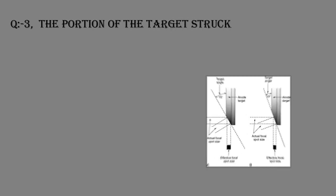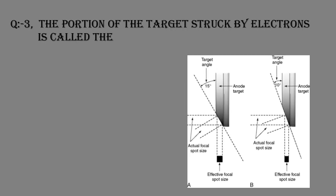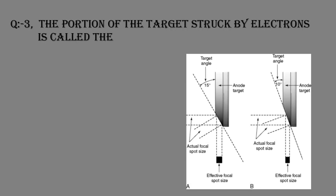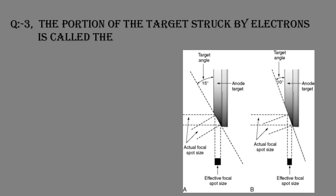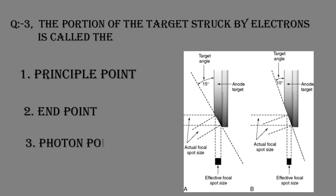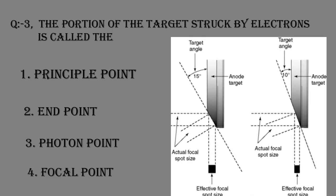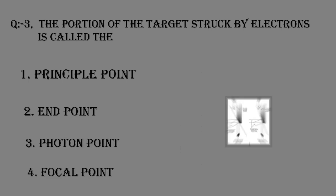Question number three: The portion of the target struck by electrons is called the — Option one: Principle point. Option two: End point. Option three: Photon point. Option four: Focal spot.